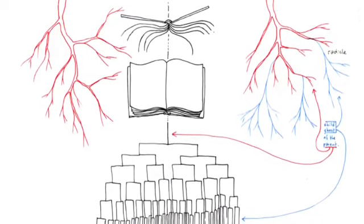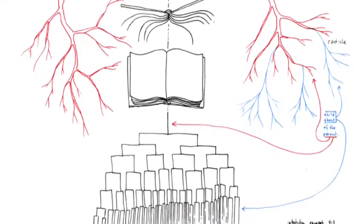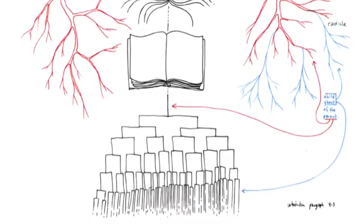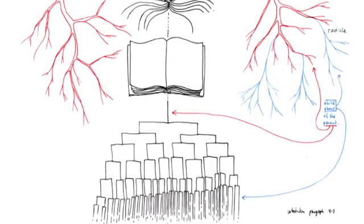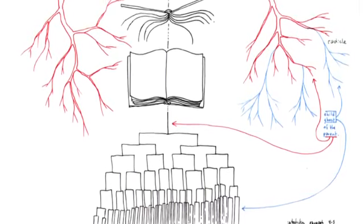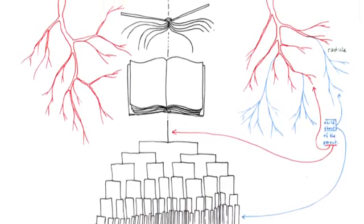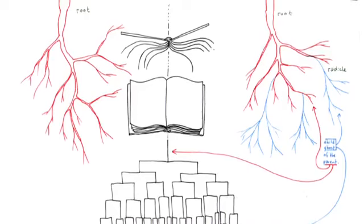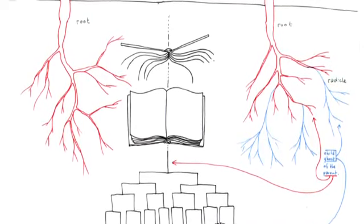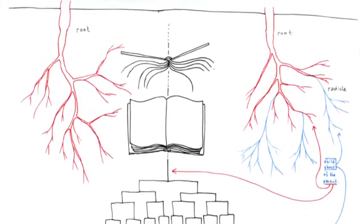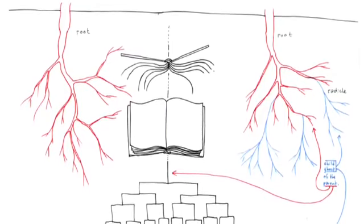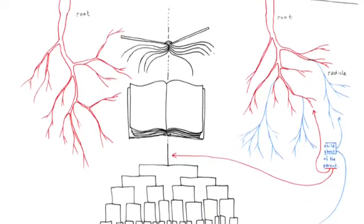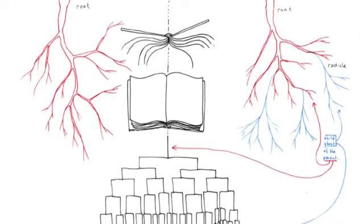The fascicular system does not really break with dualism, with the complementarity between a subject and an object, a natural reality and a spiritual reality. Unity is consistently thwarted and obstructed in the object, while a new type of unity triumphs in the subject. The world has become chaos, but the book remains the image of the world, the radicle chaosmos, rather than root cosmos.